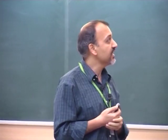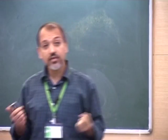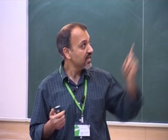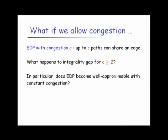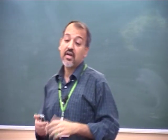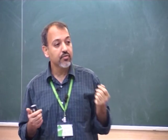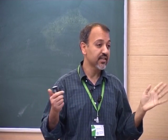From here on, EDP with congestion C means I allow up to C paths to use any single edge. The case discussed so far is congestion C = 1. What happens when congestion exceeds 1? The integrality gap example completely breaks down if congestion 2 is allowed — it relied strongly on the no-congestion condition. With congestion 2, you can route just like the fractional solution. So the central question of this talk is: is it possible that with constant congestion, EDP becomes approximable to within a polylog factor?